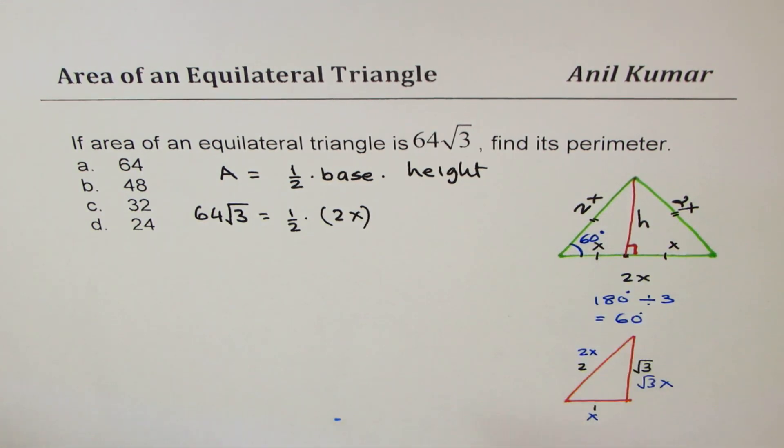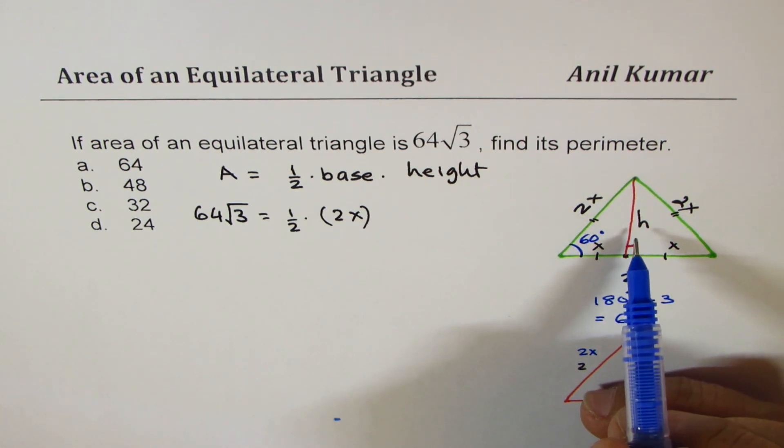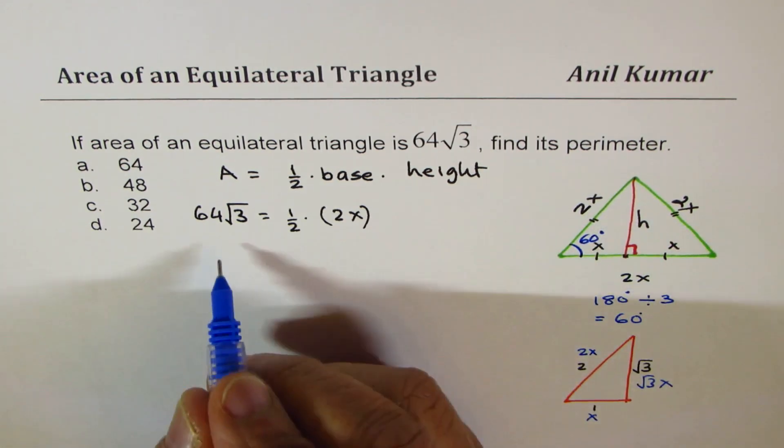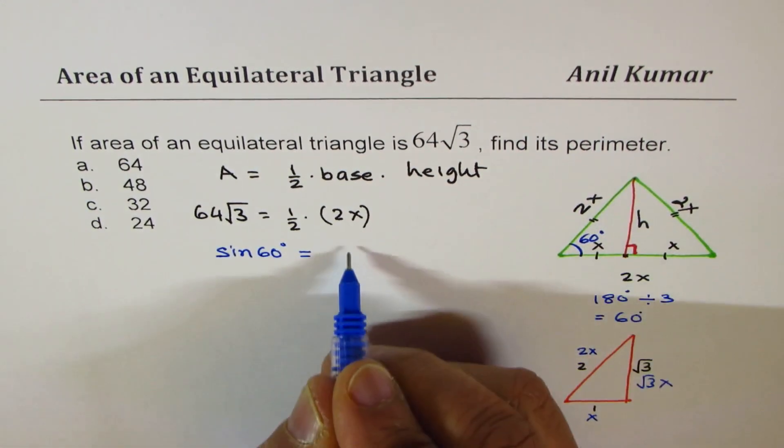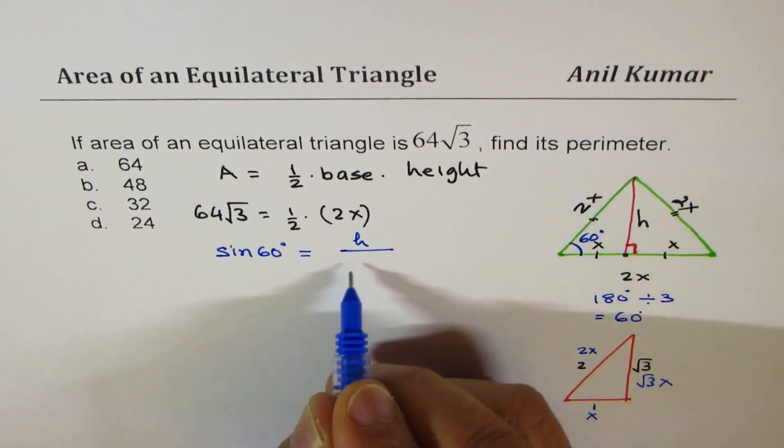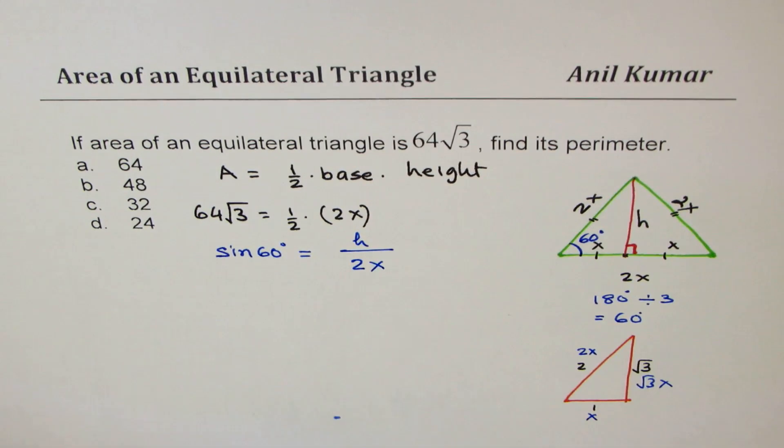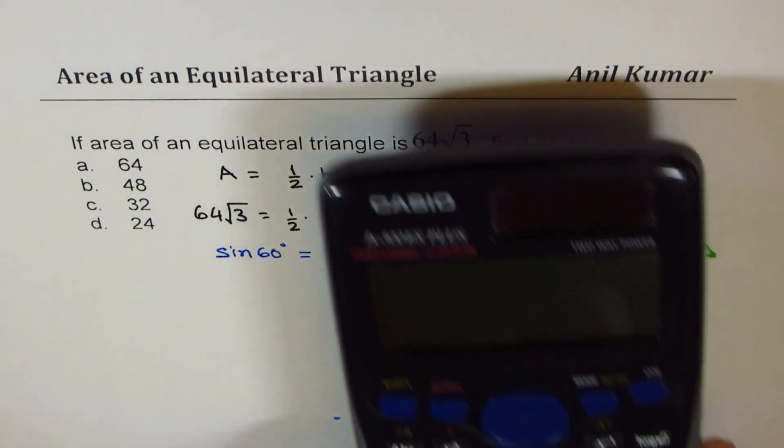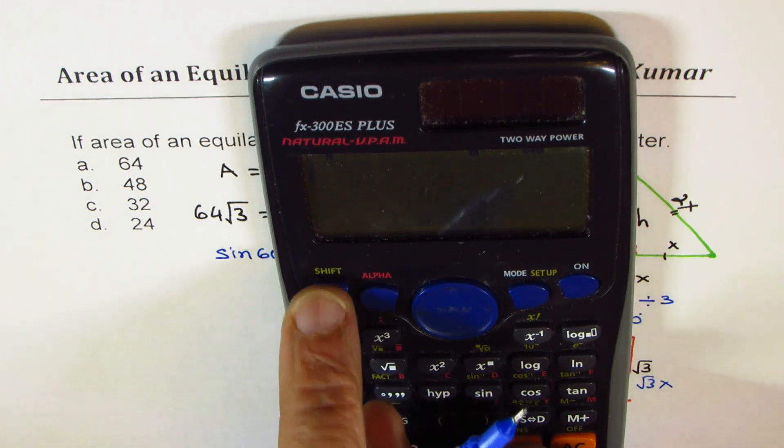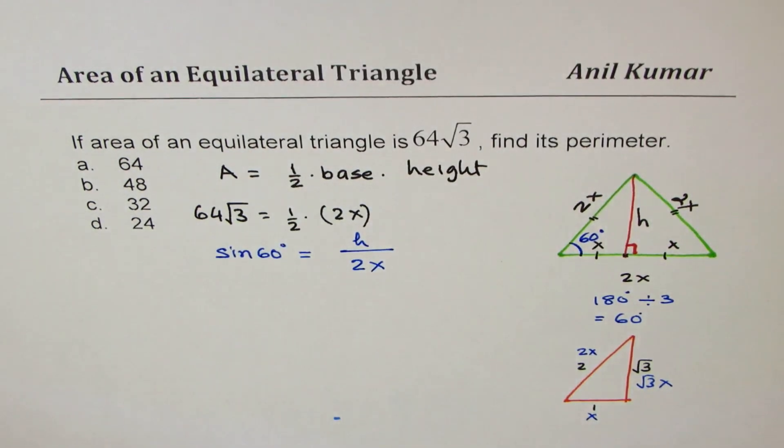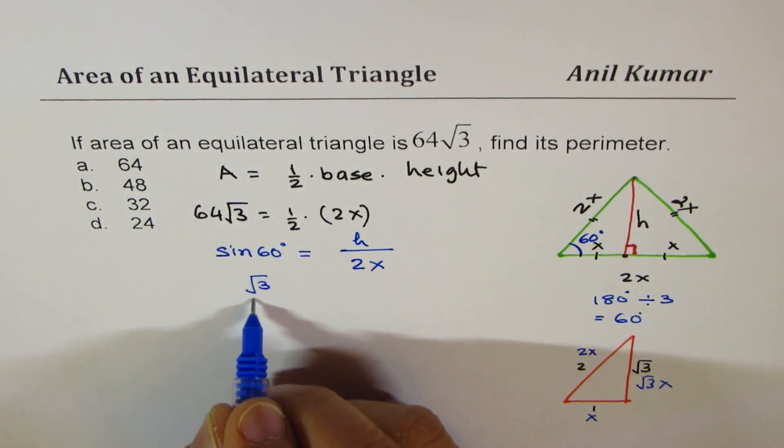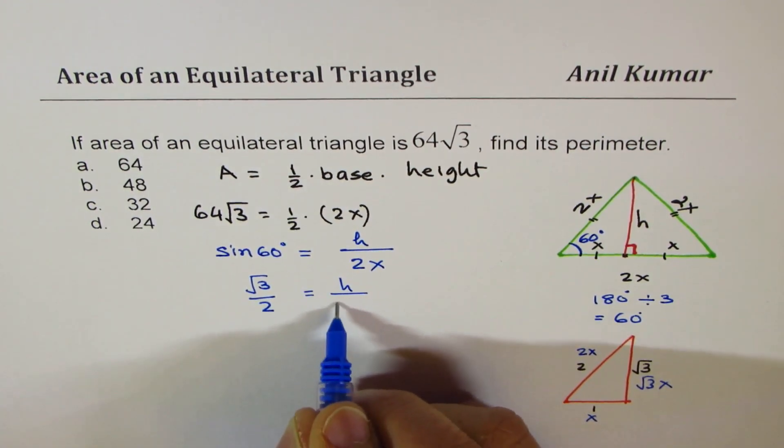The other way is to use trigonometry. We know sine is opposite over hypotenuse. So let me write down here, sine of 60 degrees is equals to the opposite side h over hypotenuse 2x. Now sine of 60 degrees, you can use calculator. So we'll find sine of 60 degrees, which is equal to square root 3 over 2.